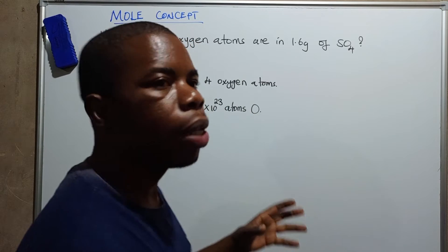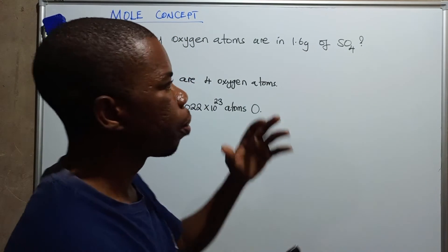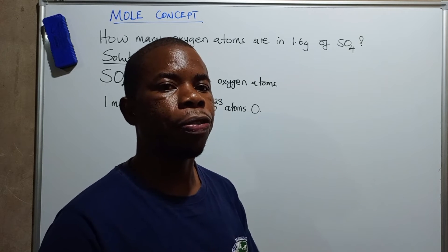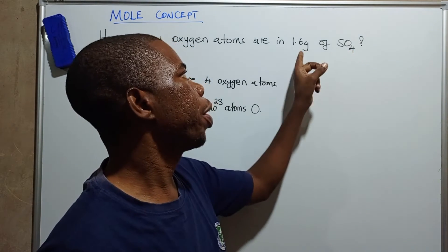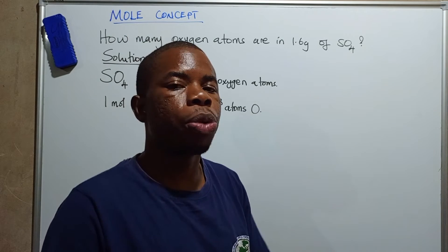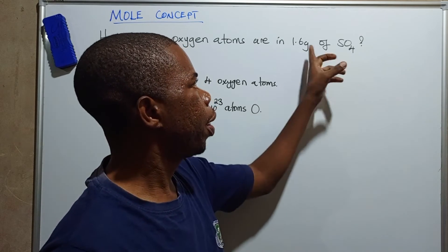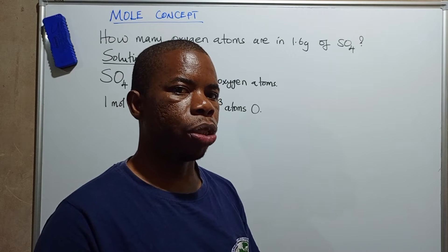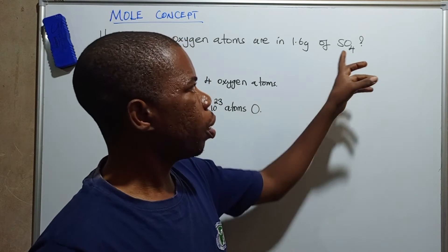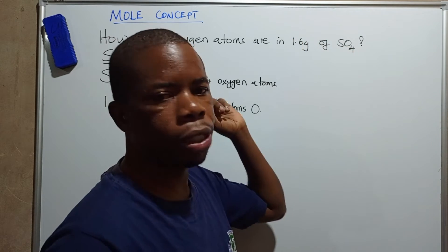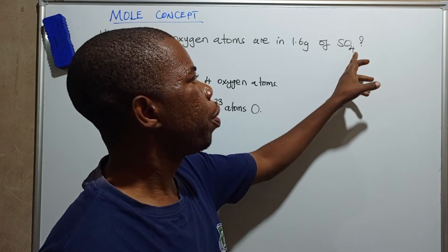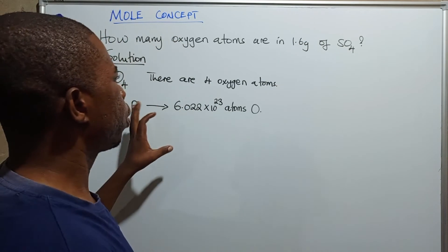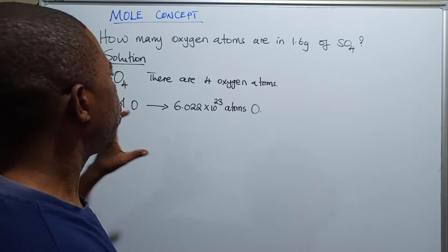So how are we going to answer this question correctly to know how many atoms are in 1.6 grams? First of all, we need to know the number of moles of sulfur trioxide in that amount. Once we know the number of moles of sulfur trioxide in that 1.6 grams, we will also be able to know how many moles of oxygen are in that. Then we will use Avogadro's relationship to find the number of atoms.